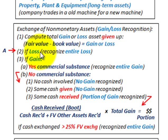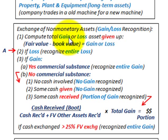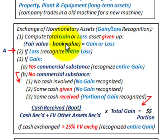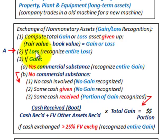In this example, we're going to have a loss, and you're going to recognize the entire loss. The first thing you'd have to do is compute any gain or loss on the asset given up. This is where you take the fair value of the asset less its book value, and that would equal any gain or loss. In our example, we're going to have a loss.